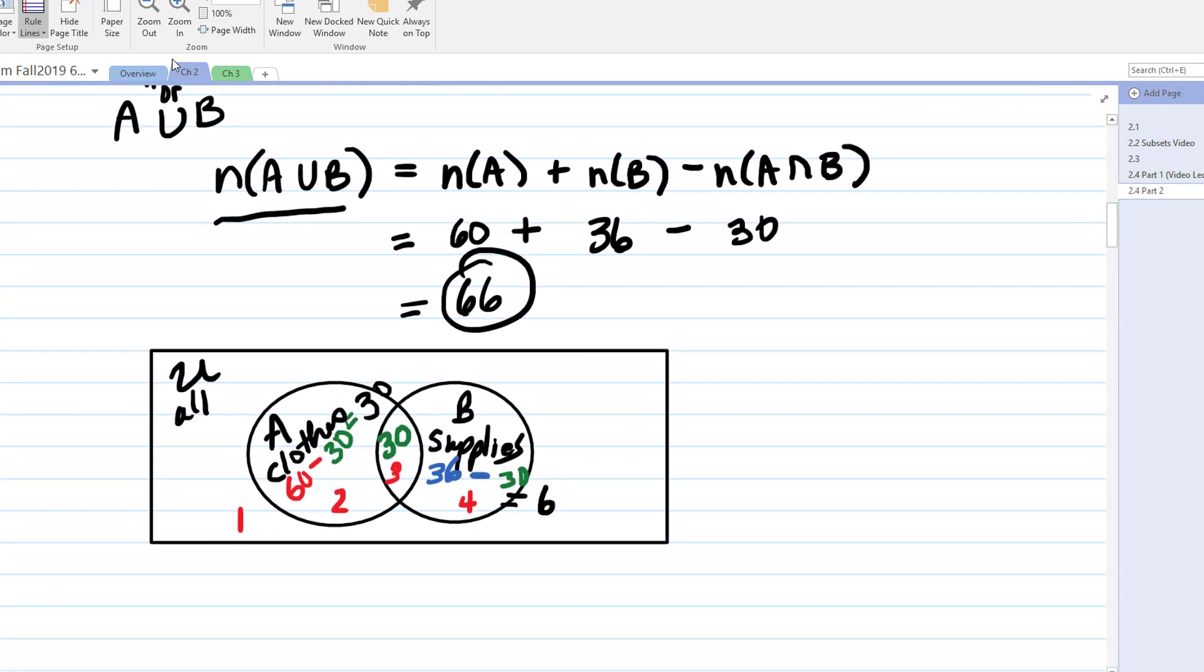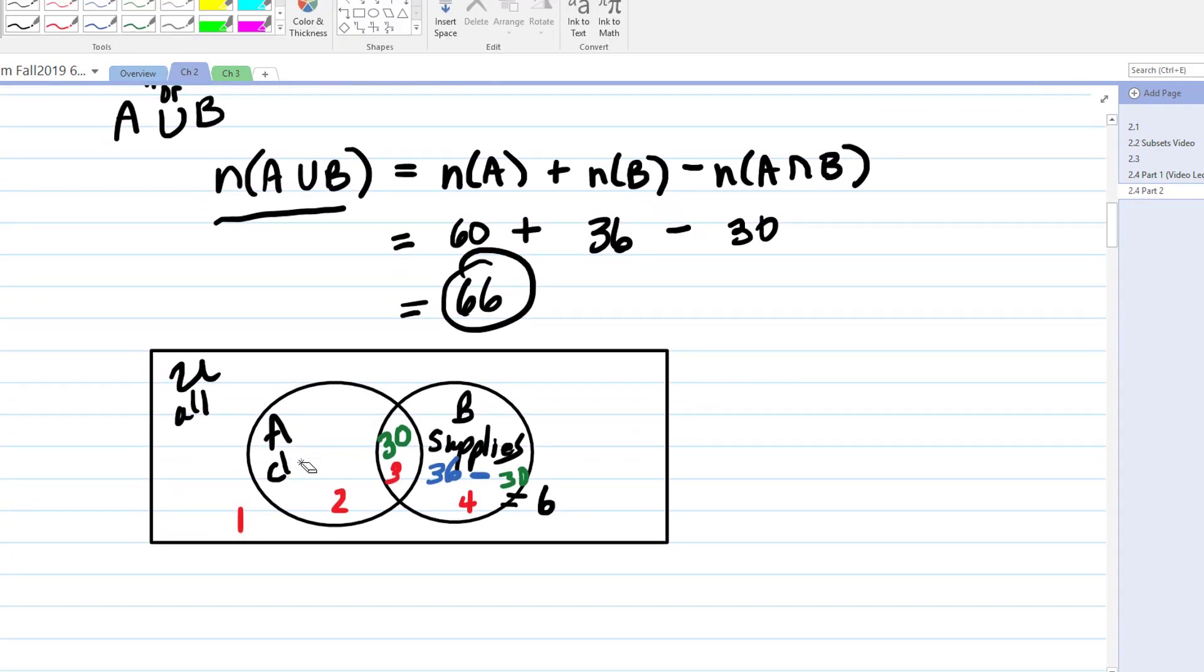This is actually enough information to answer the question because what we were trying to figure out was how many either shopped for clothes or for supplies. And that is A union B. And from this, we can see that the number that are in A union B is what? A union B is going to be regions 2, 3, and 4. So that's going to be 30 plus 30 plus 6, which is 66 that way as well.